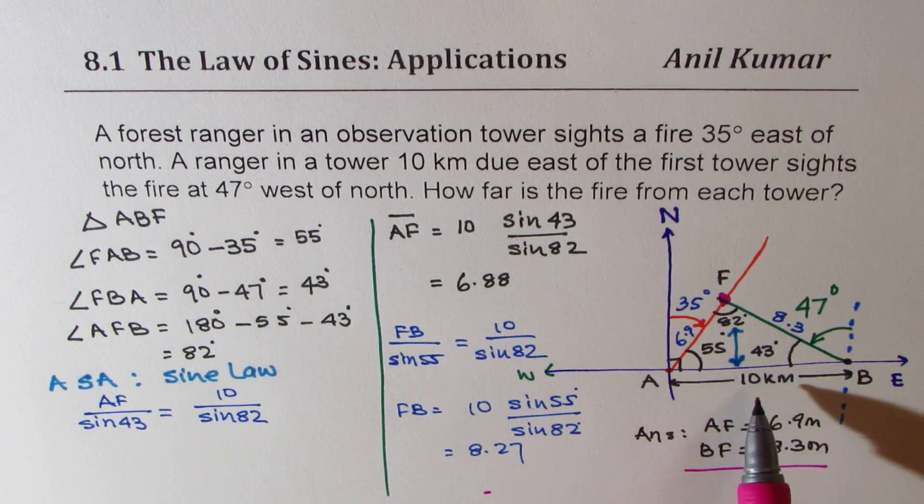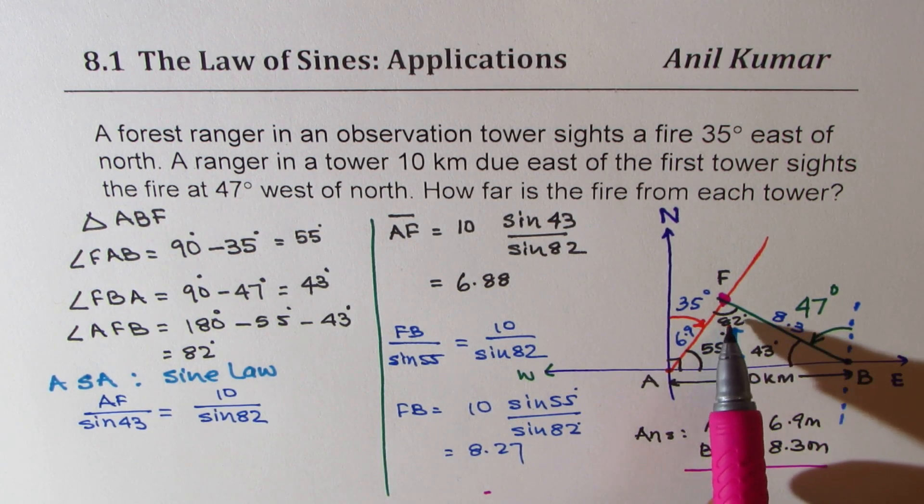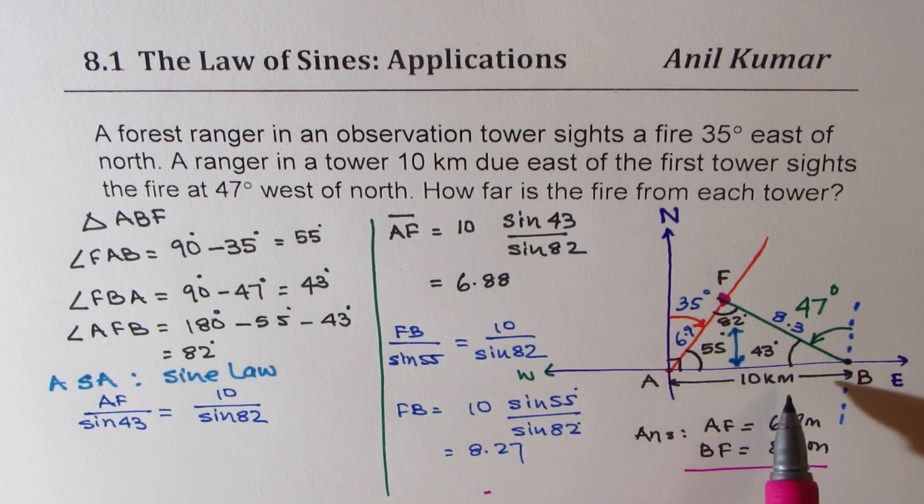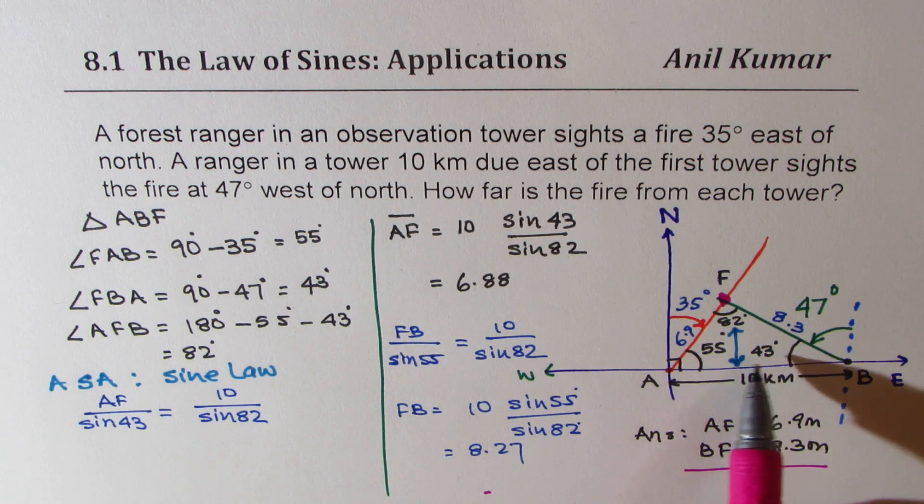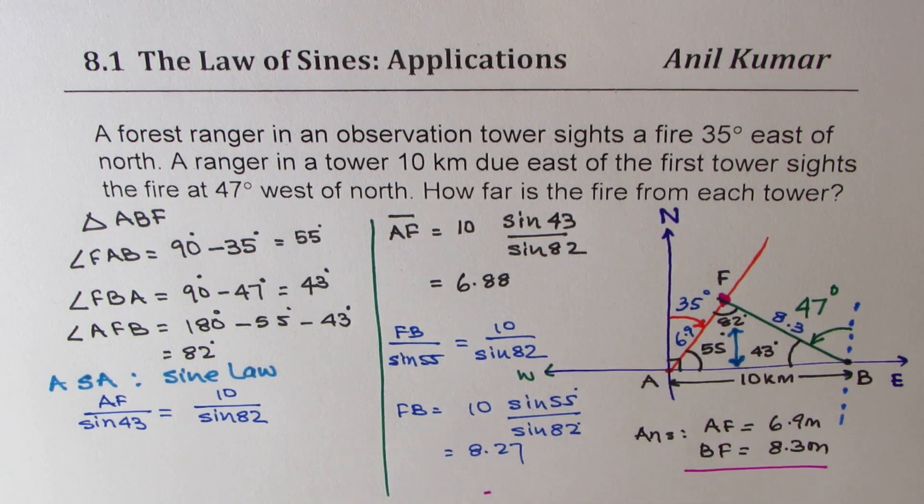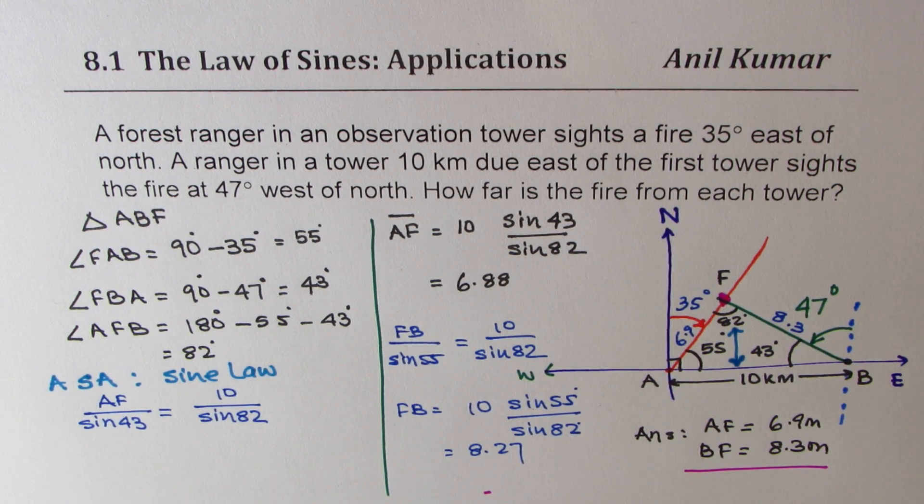So the length of the side is greater if the angle opposite to it is greater. 43 is the least angle, 6.9 is the shortest side. So that is again a test that your solution is perfectly fine. So I hope you understand and appreciate what we have done here. Feel free to like and subscribe to my videos. Thanks for watching and all the best.